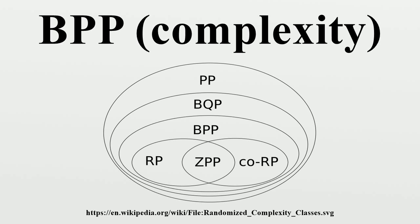Related classes: If access to randomness is removed from the definition of BPP, we get the complexity class P. If we replace the ordinary Turing machine with a quantum computer, we get the class BQP. Adding post-selection to BPP, or allowing computation paths to have different lengths, gives the class BPP-path. BPP-path is known to contain NP, and it is contained in its quantum counterpart post-BQP.